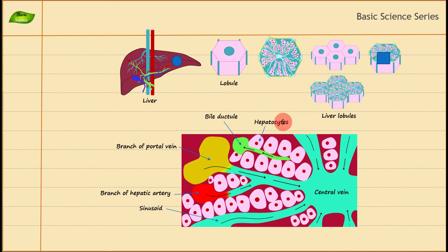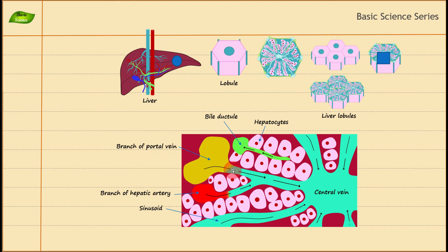The blood coming from the intestinal region may contain components we don't want in our circulatory system, such as microbial products and bacteria. To defend against this, we have Kupffer cells. The role of Kupffer cells is to defend the liver from attack by microbial components as well as live microorganisms—they are part of the immune system. We may discuss the defense mechanism inside the liver and how Kupffer cells perform their function in a future video.